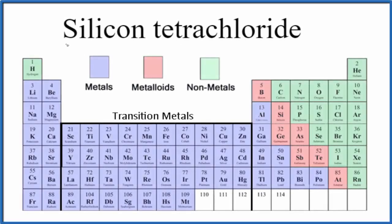In this video we'll write the formula for silicon tetrachloride. When we look at the periodic table, we see silicon, a metalloid, and chloride. That's chlorine, a nonmetal.